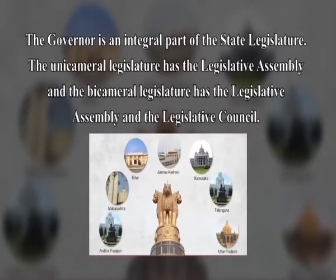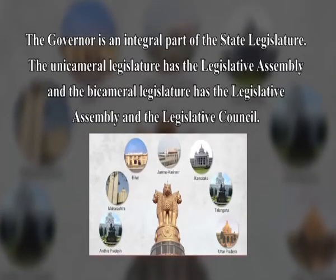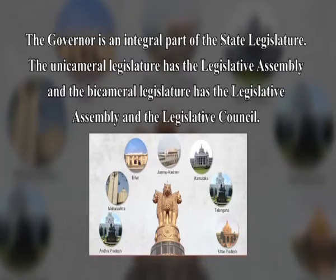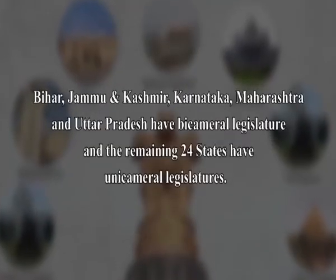Learners, every state in India has its own legislature. In some states the legislature is bicameral, that is it has two houses; in most states it is unicameral, having only one house. The governor is an integral part of the state legislature. The unicameral legislature has the legislative assembly, and the bicameral legislature has the legislative assembly and the legislative council. At present, the legislative assembly is the lower house and the legislative council is the upper house. Bihar, Jammu and Kashmir, Karnataka, Maharashtra, and Uttar Pradesh have bicameral legislatures, and the remaining 24 states have unicameral legislatures.